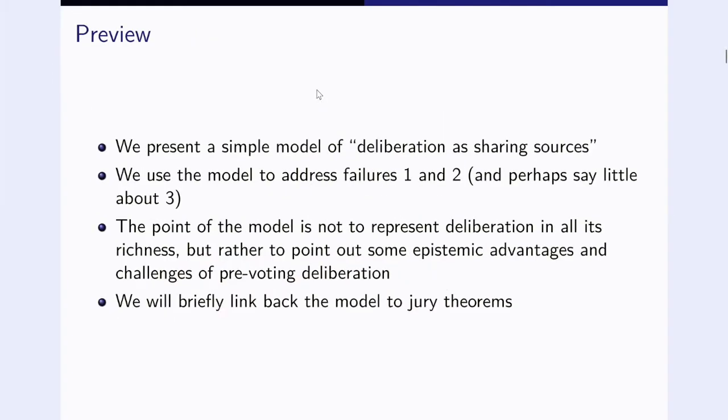In more favorable circumstances, deliberation can help to overcome some of these problems by transforming private into shared evidence, by allowing voters to aggregate and weigh according to evidence strength, and by allowing voters to draw inferences post information sharing. We present a simple model of deliberation as sharing sources, and we then use this model to address failures one and two. We will probably say very little about problem three at this point. The point of the model is not to represent deliberation in all its richness, but rather to point out some epistemic advantages and also some challenges of a pre-voting deliberation, and we will also briefly link all this back to our jury theorem in particular.